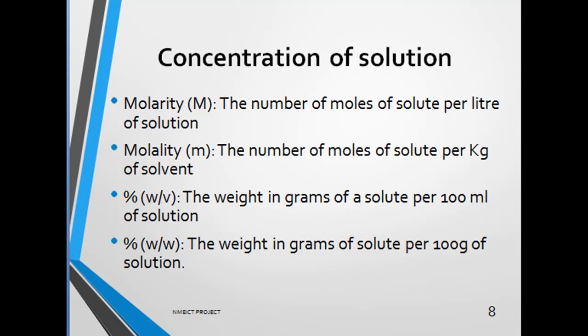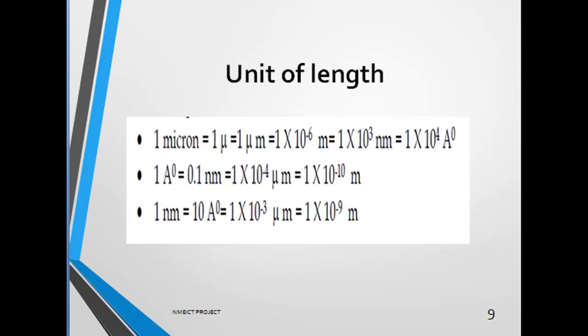Next are the units of length. 1 micron is equal to 1 micrometer. That is equal to 1 x 10^-6 meter. That is equal to 1 x 10^3 nanometer. That is equal to 1 x 10^4 angstrom.